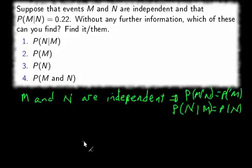And so that's what we have to go on. And we know this one. We are given the probability of M given N. That one is 0.22.